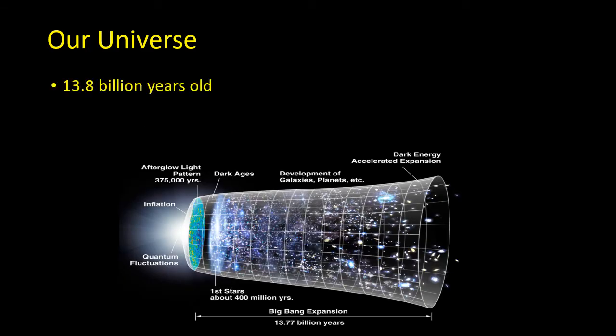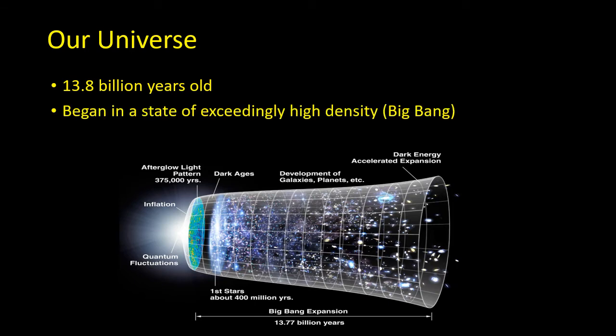We believe our universe is 13.8 billion years old. It began in a state of exceedingly high density, which we call the Big Bang, and it's been expanding and cooling ever since. If we average out over our entire observable universe, the average density is only 9 times 10 to the minus 27 kilograms per cubic meter. This is an incredibly low figure, equivalent to around seven atoms of hydrogen per cubic meter.